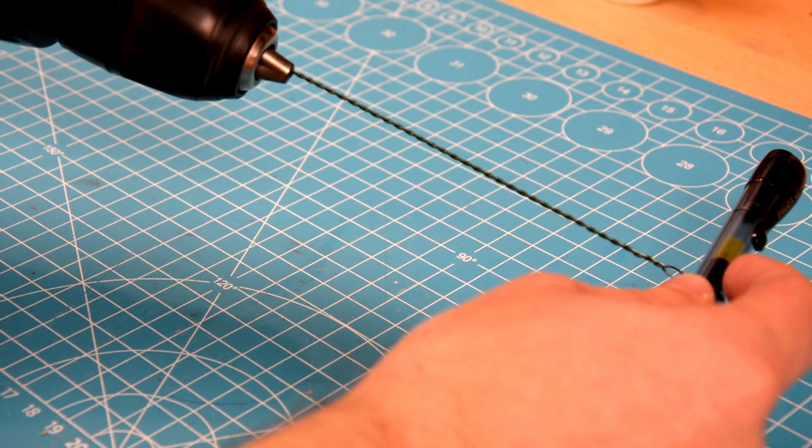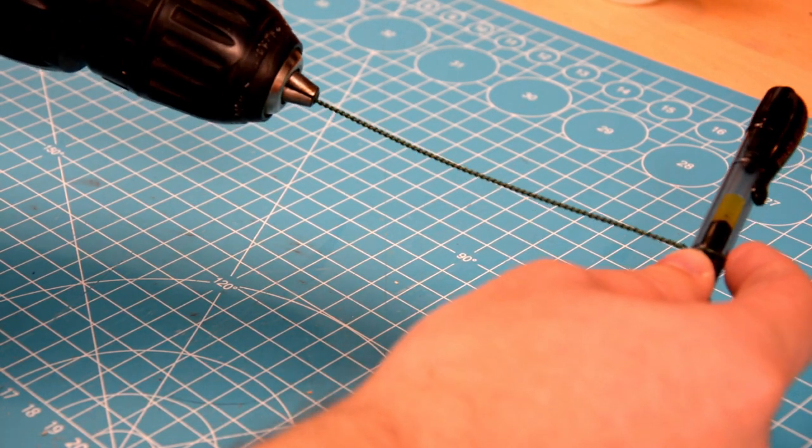It's up to you how much you want to twist it, but I find that if you overdo it, it'll start looking like rope.